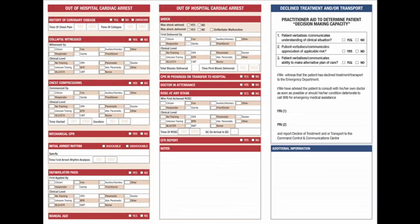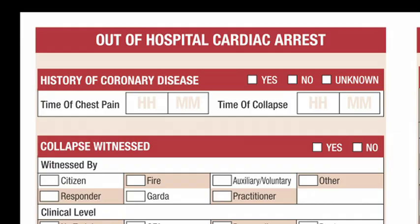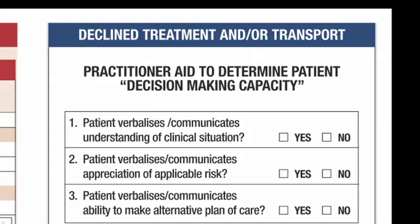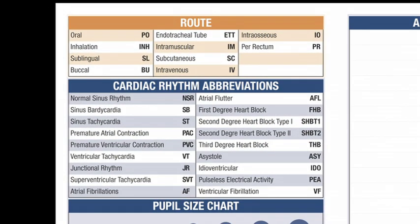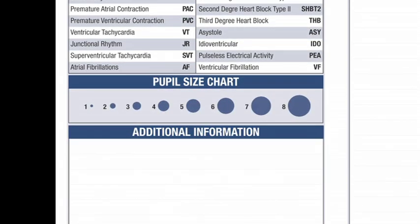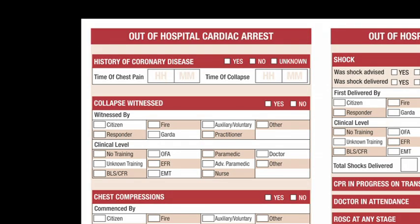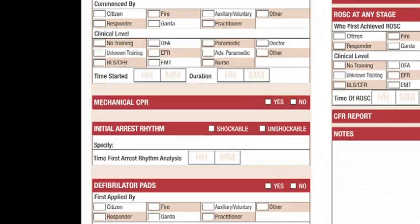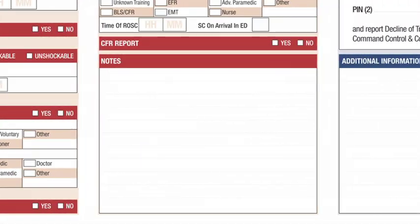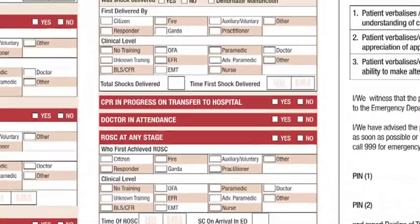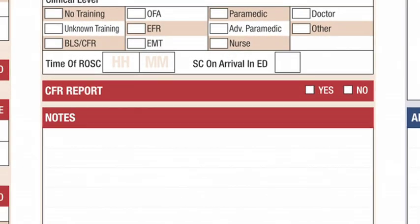On the back of the second copy of the PCR are the following sections: out of hospital cardiac arrest, declined treatment and/or transport, a list of abbreviations used in this report for route, cardiac rhythm and medications, a pupil size chart, and additional information space if required. The out of hospital cardiac arrest panel must be completed by the practitioner in all cases where a cardiac arrest has occurred. Information gathered here is very important for the collection of national out of hospital cardiac arrest data. In the case where a cardiac first response report has been completed, tick yes and hand over the top copy of the cardiac first response report to the hospital destination facility.